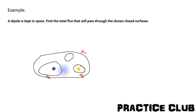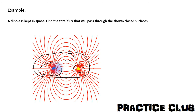It is something like this: lines come out from the positive charge and enter into the negative charge, as discussed in the previous lecture on lines of force. From the positive charge, the lines that come out are q by epsilon, and therefore the flux through the surface enclosing the positive charge is q by epsilon. The lines entering the negative charge are also q by epsilon, and therefore the flux through that surface is negative q by epsilon.